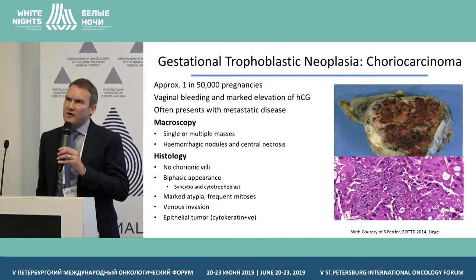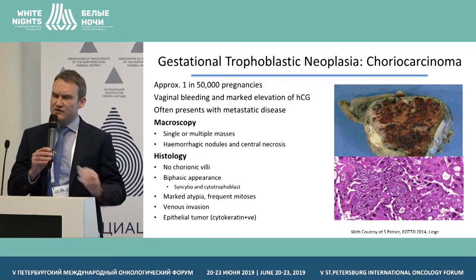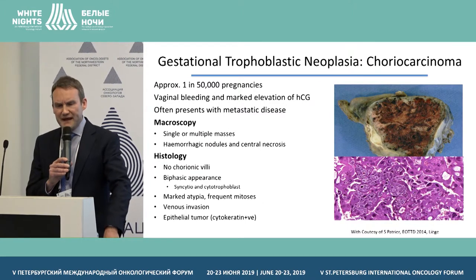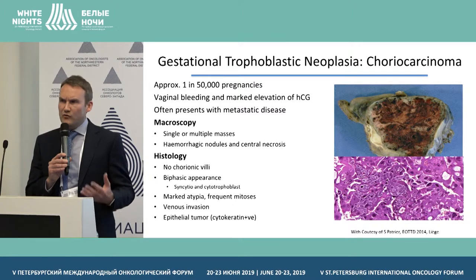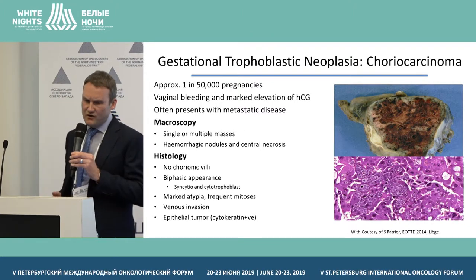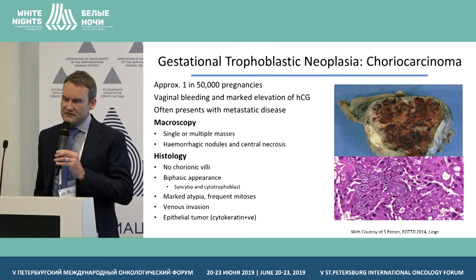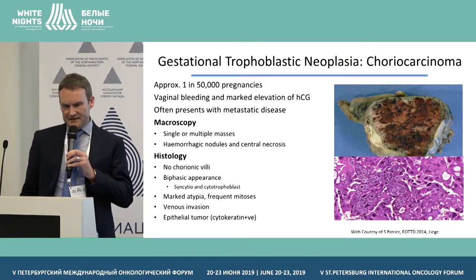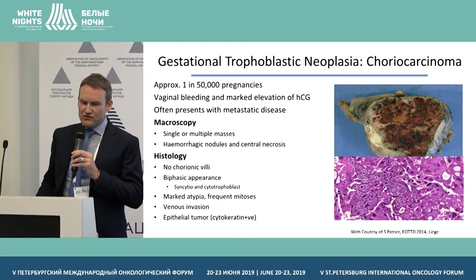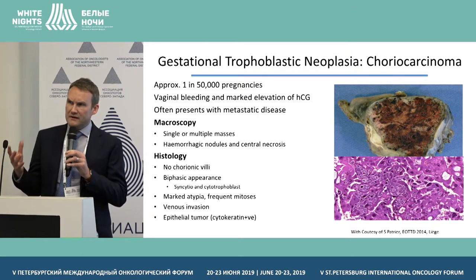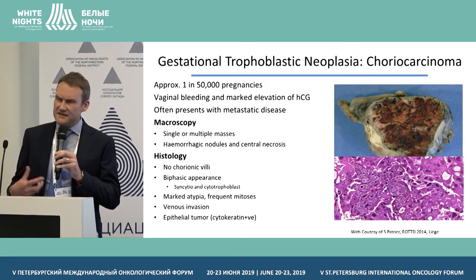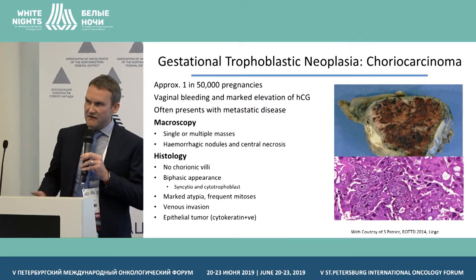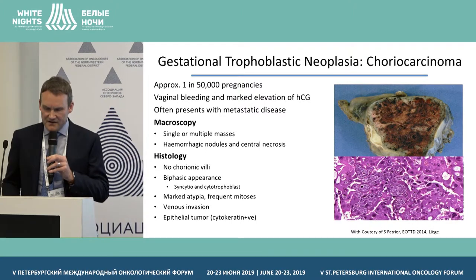Choriocarcinoma is a very aggressive HCG-producing epithelial cancer with an incidence of approximately 1 in 50,000 pregnancies. It tends to present with vaginal bleeding and marked elevation of HCG, often with complications of metastatic disease such as large volume lung metastases or brain metastases. Macroscopically there may be single or multiple masses with hemorrhagic nodules with central necrosis. On histology, the key appearance is a biphasic architecture of syncytio- and cytotrophoblastic proliferation, absence of chorionic villi, marked atypia, high mitotic activity, and signs of venous invasion.